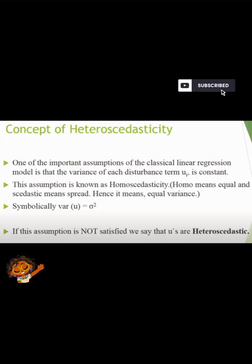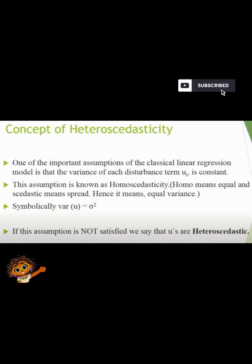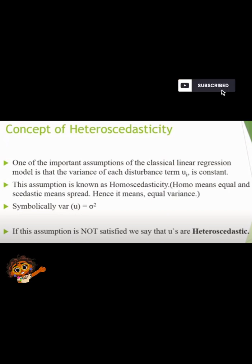Next is heteroscedasticity. One of the important assumptions of the Classical Linear Regression Model is that the variance of each disturbance term Ui, that is the error term, is constant. This assumption is known as homoscedasticity — 'homo' means equal and 'scedastic' means spread, hence it means equal variance. In the OLS method, the assumption is that the variance of the error term is equal for all observations. If this assumption is not satisfied, we say that the model has heteroscedasticity.